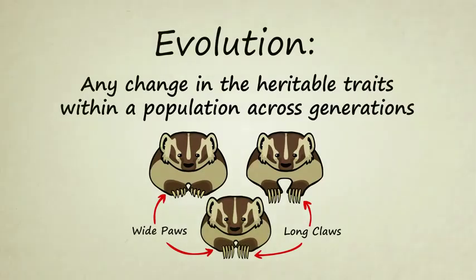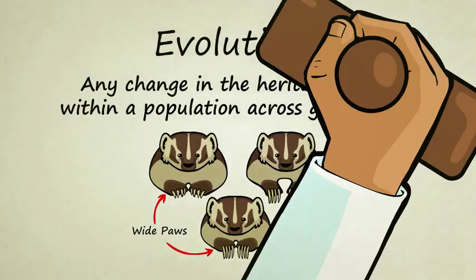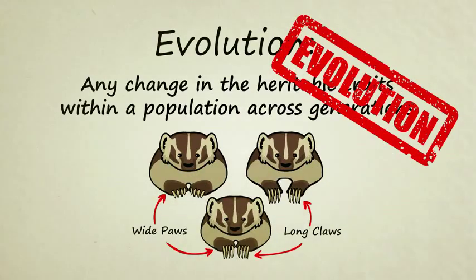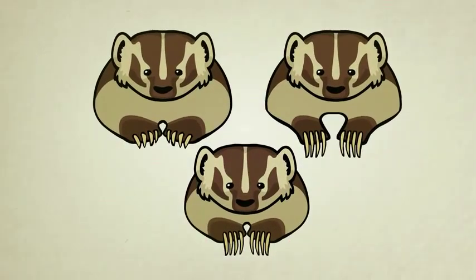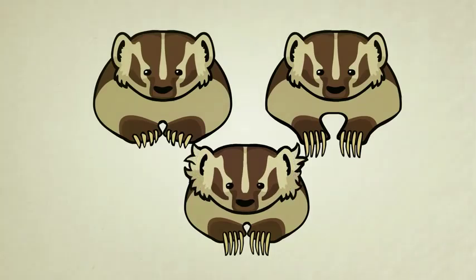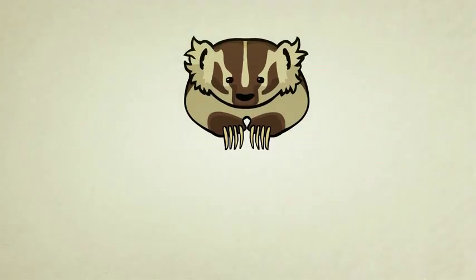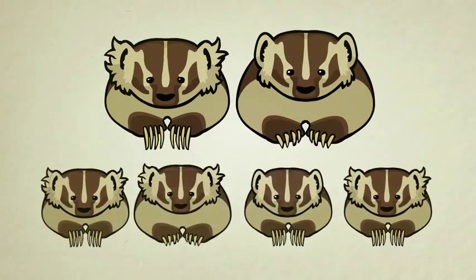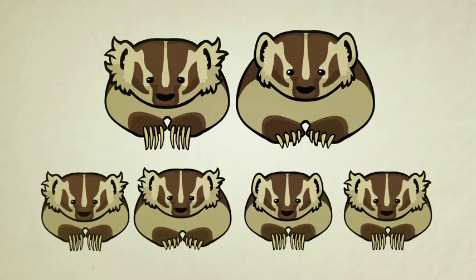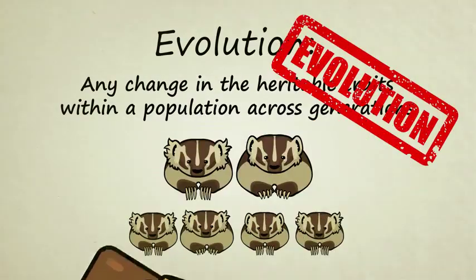Any change in the heritable traits within a population across generations has officially occurred. Besides a unique recombination of her parents' traits, she might also have developed some completely new traits of her own due to DNA mutations — maybe extra hairy ears, for example. If she survives long enough to have kids, her DNA will combine with the DNA of her partner, and she'll pass on those extra hairy ears to at least some of her children. Again, evolution has officially occurred.